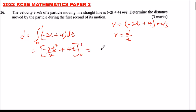This equals [(-1²) + 4(1)] minus [0]. Substituting t=1 gives us -1 + 4.